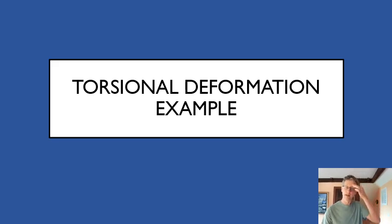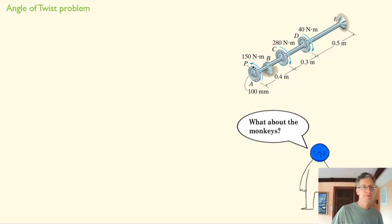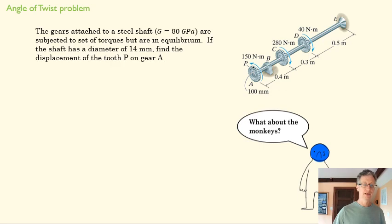We're going to do a torsion deformation example. Here we have multiple torques on the same shaft with two bearings and a support that's not allowing it to turn. We're going to figure out what our total angle of twist is.